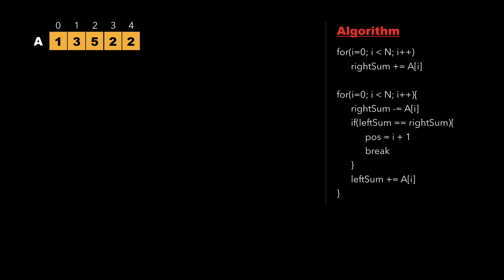Now let's look at the approach to solve this problem. We consider the same example where the array size is 5 and elements are 1, 3, 5, 2, 2. Before starting the algorithm, we declare a variable position and initialize it to minus 1, since if there is no equilibrium point we return minus 1. We also initialize left sum and right sum to 0.